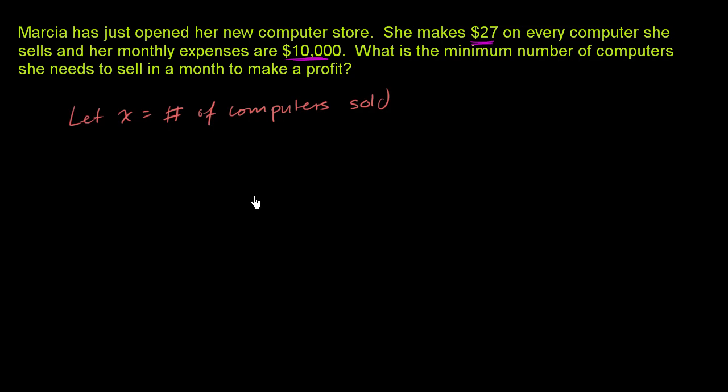Now let's think about how much net profit she will make in a month. How many computers, the minimum number she needs to sell in order to make a net profit. So I'll write her profit. Her profit is how much money she brings in from selling the computers. She makes $27 on every computer she sells, so her profit is $27 times the number of computers she sells. But we're not done yet.